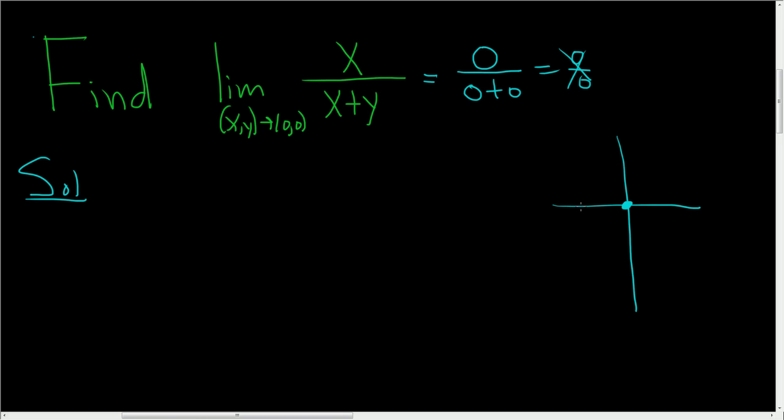Let's start by approaching along the x-axis. We'll approach (0,0) along the x-axis. If we're approaching (0,0) along the x-axis, we're setting y equal to 0.